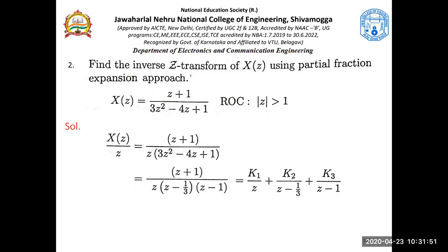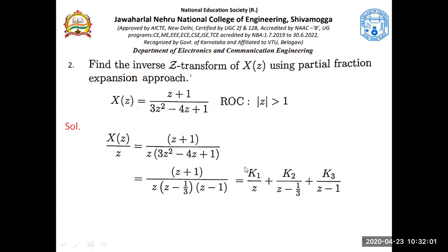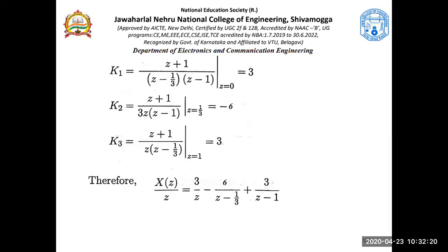By the partial expansion method, this can be expressed with three factors — there are now three factors instead of two — so we need K1/Z + K2/(Z - 1/3) + K3/(Z - 1). We have to find K1, K2, K3. The values are 3, -6, and 3. Substituting these, X(Z)/Z looks like that form. Whatever the order of the equation, we factorize and bring it to this form.